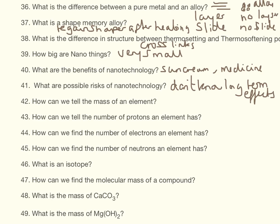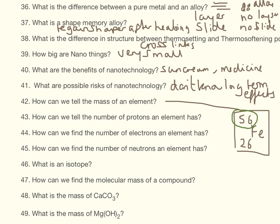How can we tell the mass of an element on the periodic table? Using the example of iron — 56 and 26 — the mass is the larger number, so 56. The number of protons is the smaller number, which is also the number of electrons. The number of neutrons is the mass minus the atomic number.